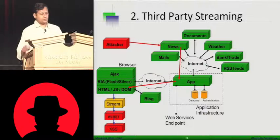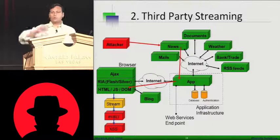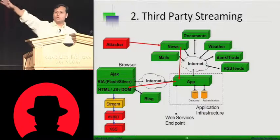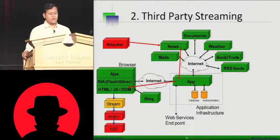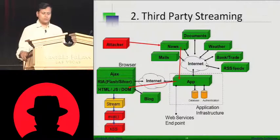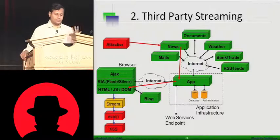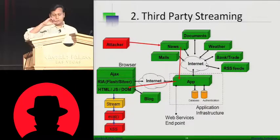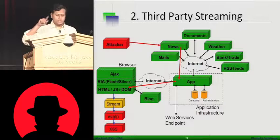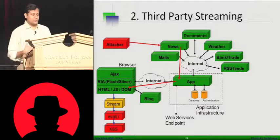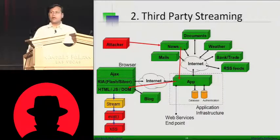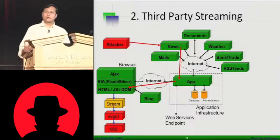The second category is pretty simple: an attacker posts something on a news site controlled by a third party. The attacker will post a news article, document, weather feed, etc., and that particular piece of information will tunnel through your application and hit your DOM. That raw stream coming in is not validated — it is not a trusted one.